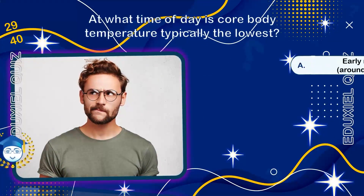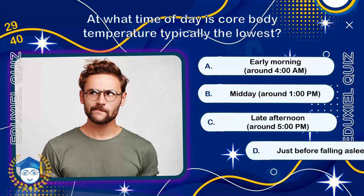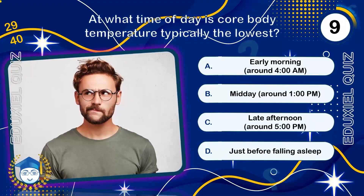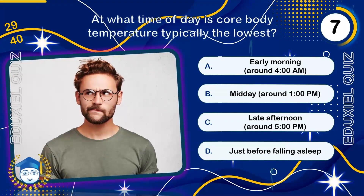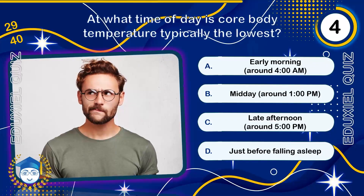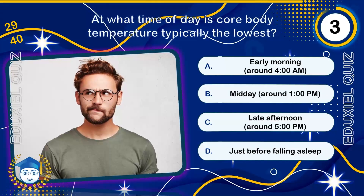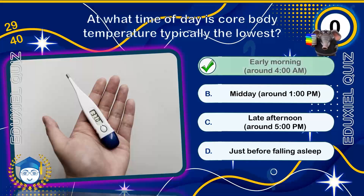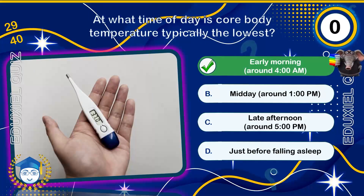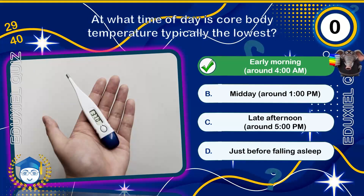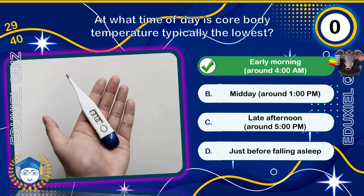At what time of day is core body temperature typically the lowest? Early morning, around 4 AM. This dip in temperature is part of the circadian rhythm, coinciding with the deepest phase of sleep.